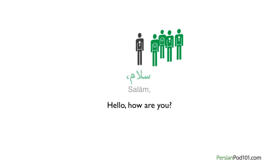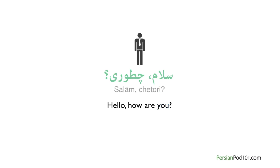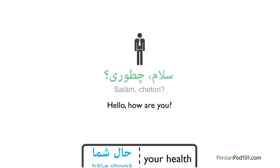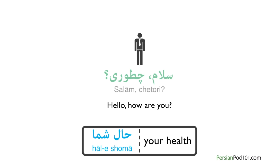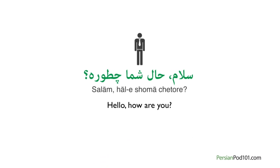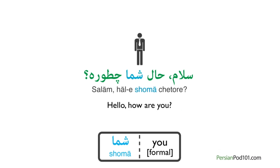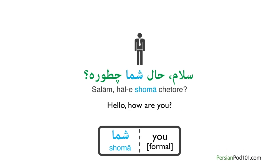Let's try out the informal way of saying hello. How are you? Salam. Chetori. The 'i' in chetori makes this sentence second person. The formal way becomes slightly longer — add 'hale shoma,' which means your health: Salam. Hale shoma chetore? Hale shoma chetore literally means how is your health. We use 'chetore' instead of 'chetori' to make this more formal.